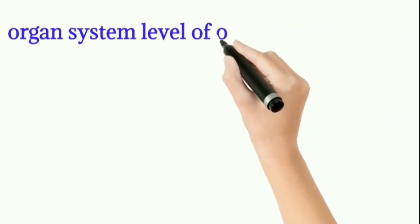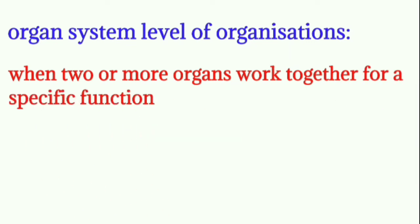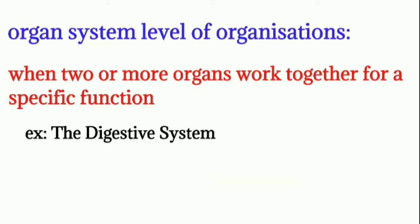Organ system level of organization. When two or more organs work together for specific functions, a group of organs constitutes an organ system, which performs particular functions. For example, the digestive system — there are many organs involved in the digestive system.